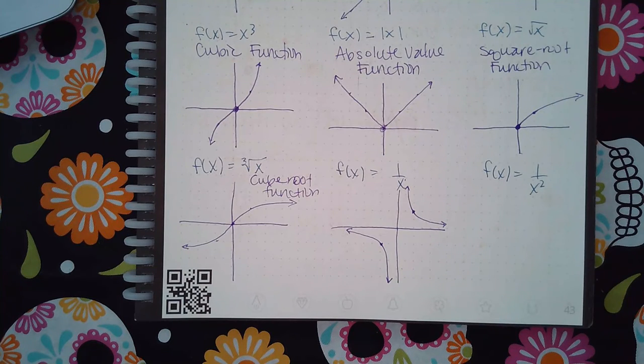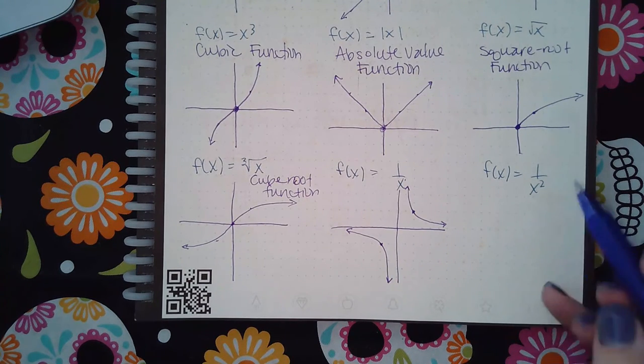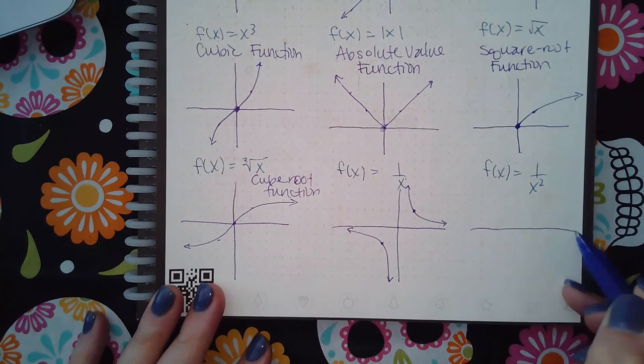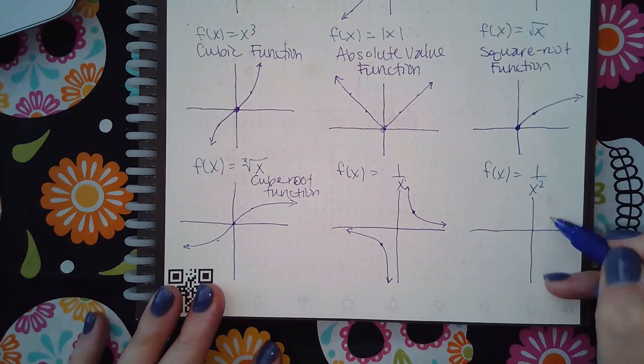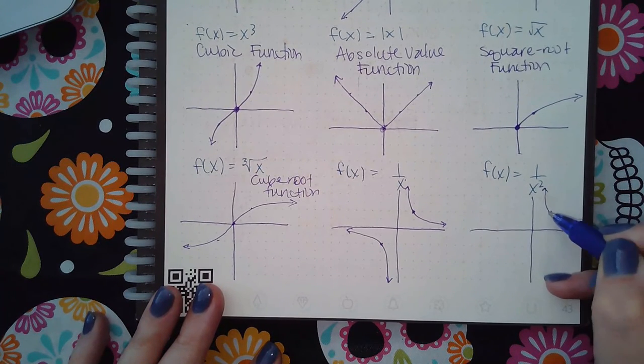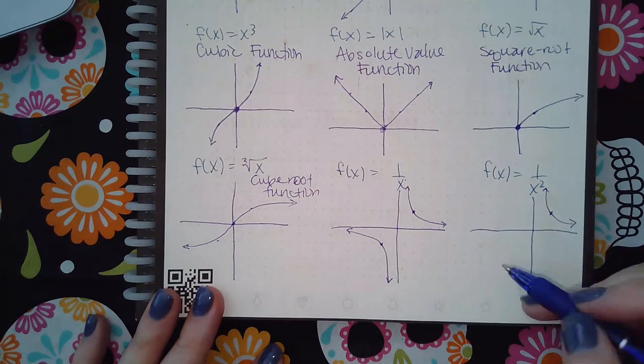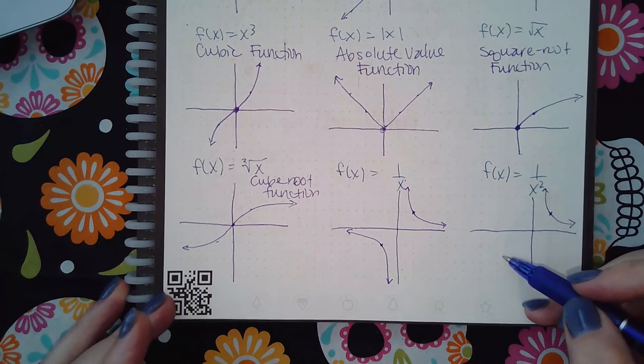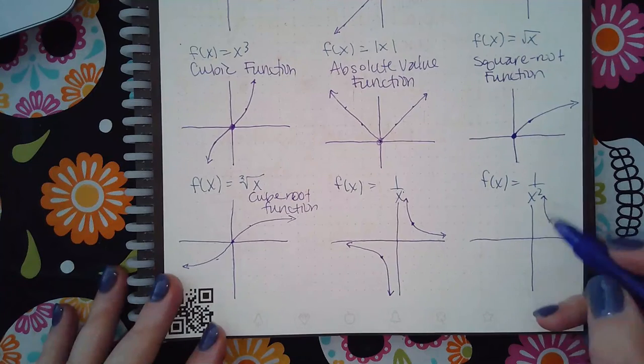So we'll get to that when we get there. But for the x squared function, this one's a little bit different. It does kind of look the same thing on this side, but on this side when you square a negative number, a negative number times itself actually turns out to be a positive number.